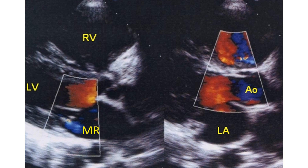Dilated right ventricle is seen on parasternal long axis view on 2-dimensional echocardiography with colour Doppler imaging. Structures labeled include LA (left atrium) and AO (aorta). There is a trivial mitral regurgitation jet seen in the left atrium as a blue jet in the left frame, with the mitral valve in closed position, which is of no practical significance.